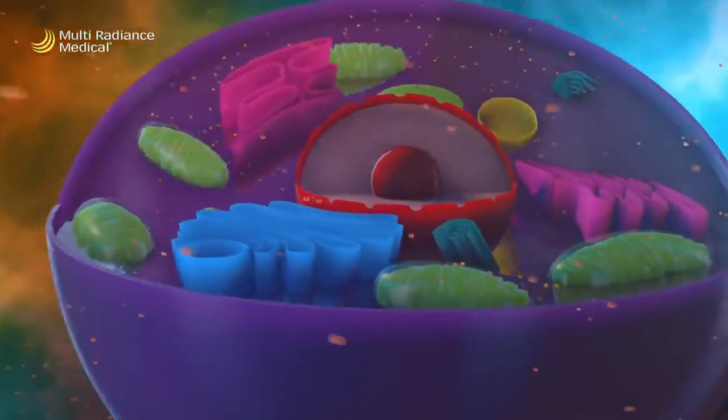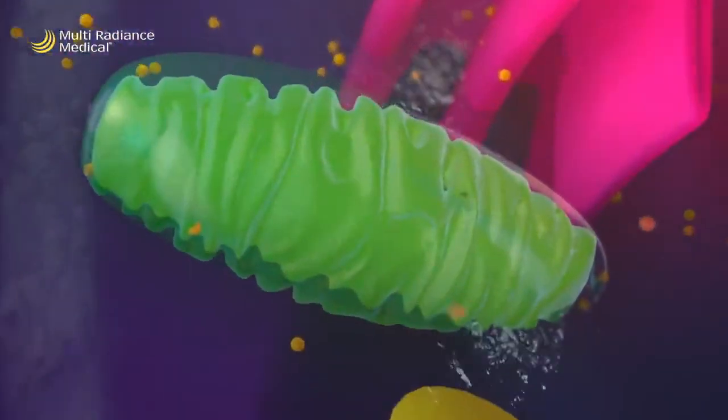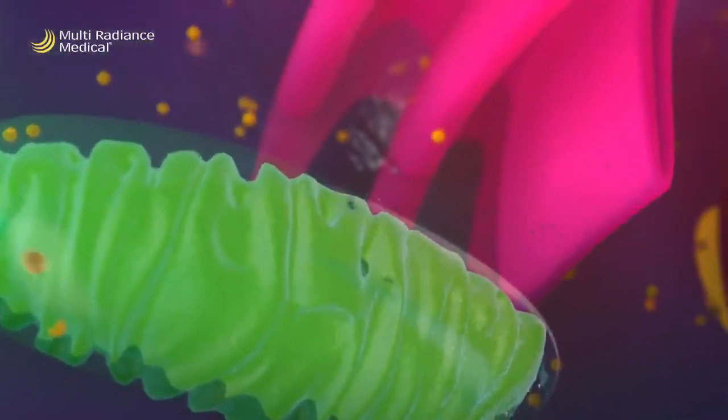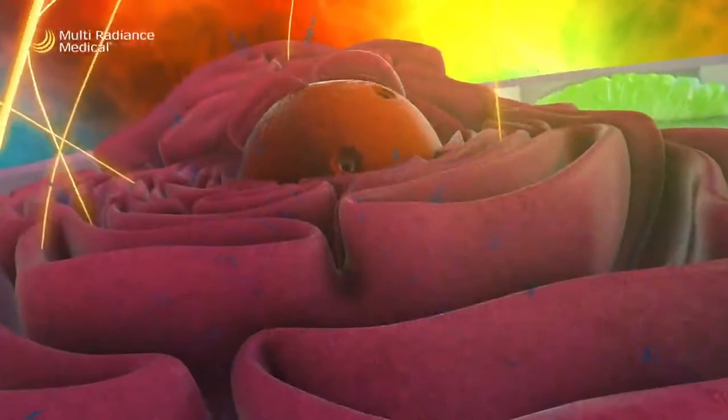The primary pathway is the absorption of energy which increases production of ATP and changes in the cell membrane photochemical and photophysical effect. The secondary pathway is based on what the cell does with the energy.